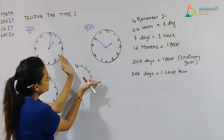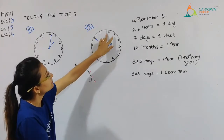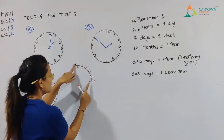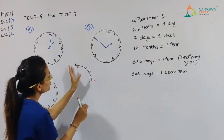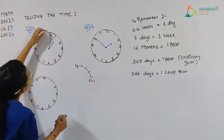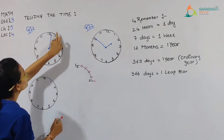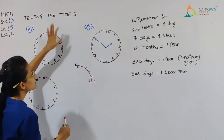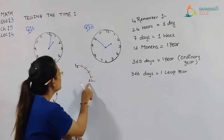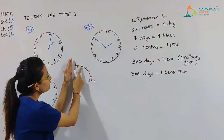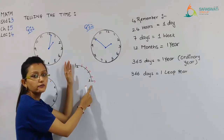So from 12 to 1, this is that portion. Between 12 and 1, this big gap is divided. So from 12 to 1, between 12 o'clock and 1 o'clock, there are 1, 2, 3, 4 and 5 marks in between. So there are 5 marks drawn here.